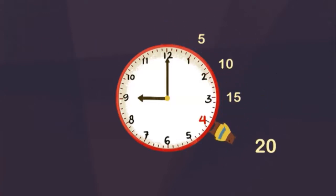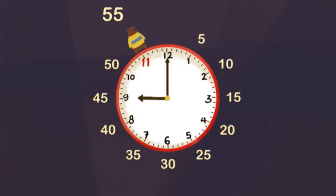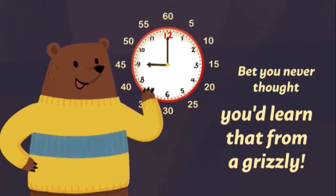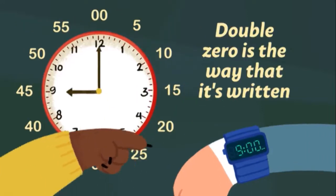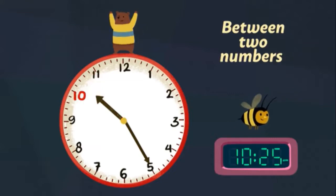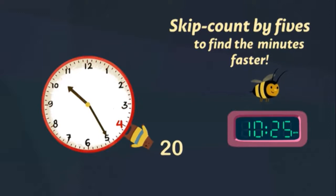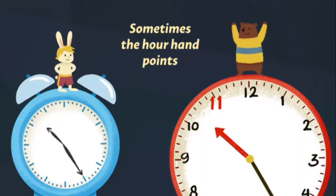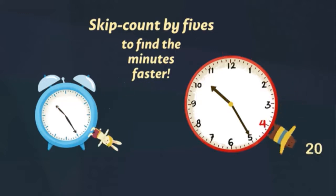Skip counting by fives: 5, 10, 15, 20, 25, 30, 35, 40, 45, 50, 55, 60. When we reach the 60th minute, double zero is the way it's written. Sometimes the hour hand points between two numbers — the hour is the number the hand is after. Skip count by fives to find the minutes faster.